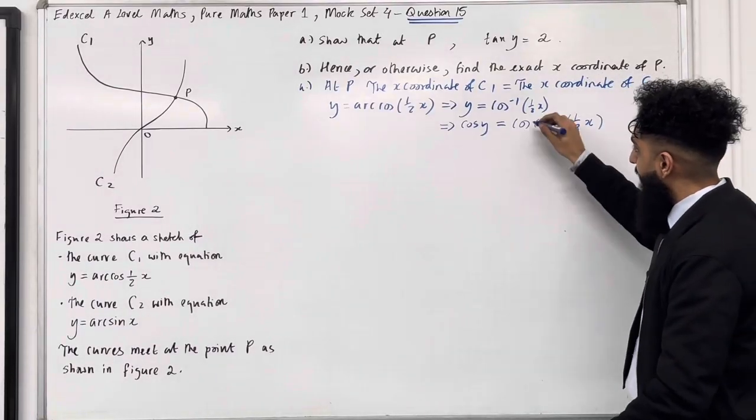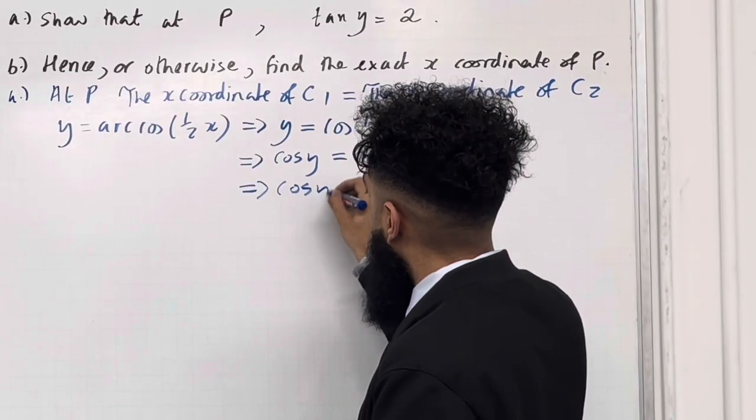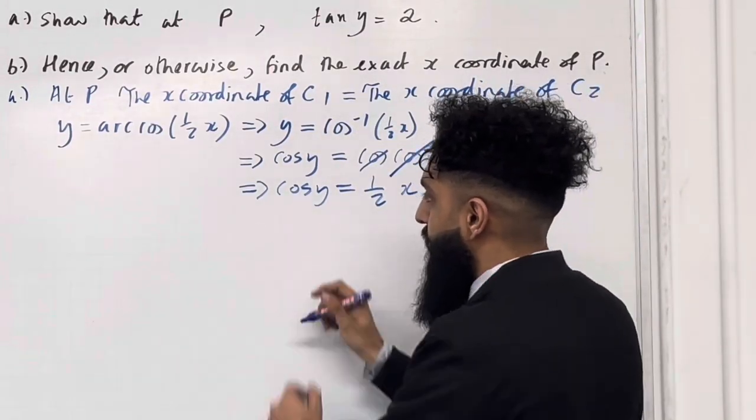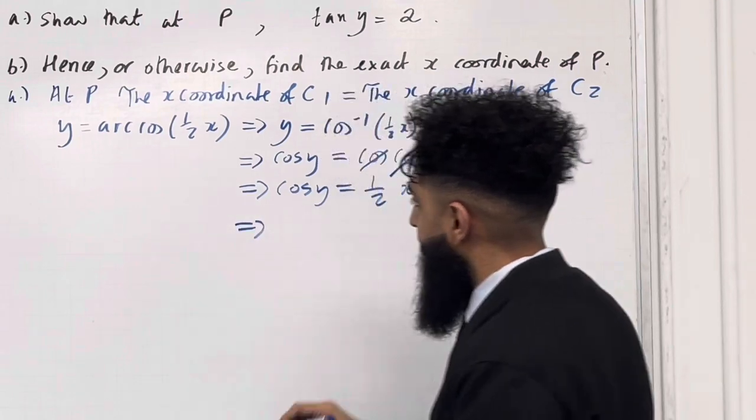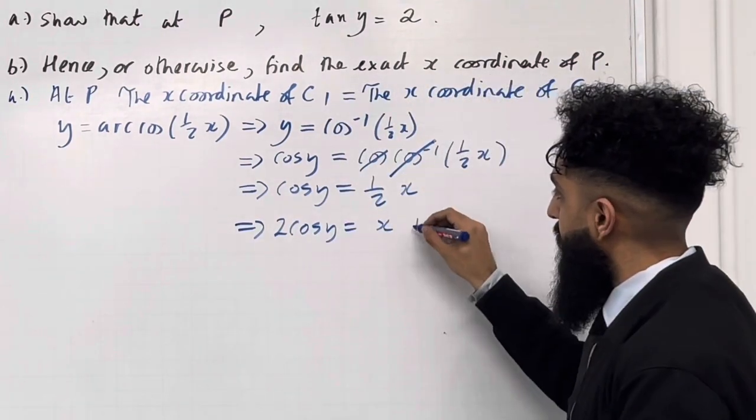Now, the cos and the cos inverse cancel, reducing the equation to cos y = ½x. I can multiply by 2. So this gives me 2cos y = x. Equation 1.